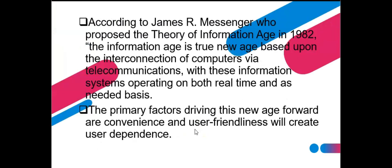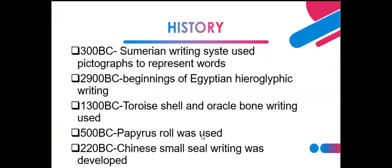According to James Messenger, who proposed the theory of the information age in 1982, the information age is a true new age based upon the interconnection of computers via telecommunications. With this information system operating both in real time and on an as-needed basis, the primary factors driving this new age forward are convenience and user-friendliness, which create user dependence.